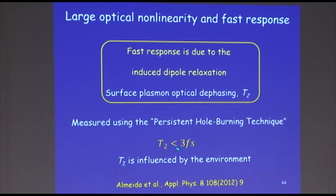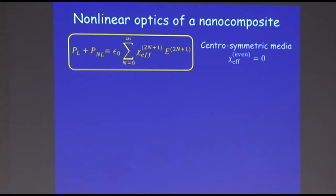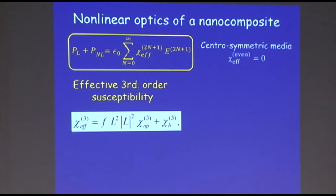When the applied field is not in resonance, the optical response depends on the relaxation of the dipoles induced in the particle. The relaxation of these dipoles is on the order of 3 femtoseconds — quite difficult to measure, but possible using the persistent hole-burning technique to estimate this T2 time. So we have a system that has large nonlinearity and fast response. Coming back to the subject of the first class, we can do nonlinear optics with these composites. These are centrosymmetric media, so there is no even-order susceptibility, and we write the polarization accordingly.